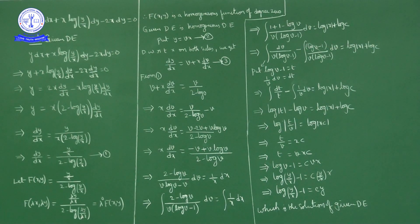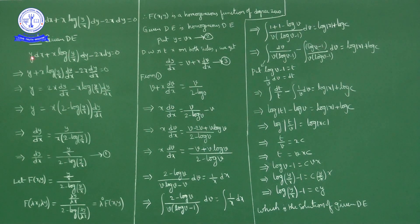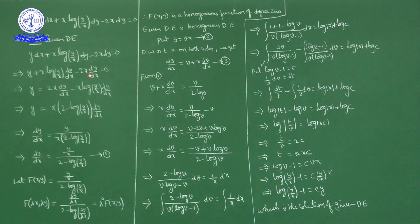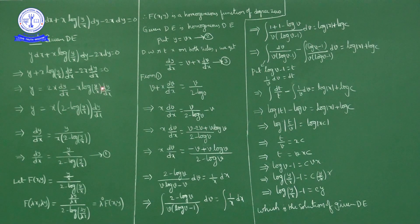We have to prove that this differential equation is a homogeneous differential equation. Rearranging: minus 2x dy becomes plus 2x dy/dx on one side. So y equals 2x dy/dx minus x into log(y/x) into dy/dx. From these two terms, we take dy/dx common and x common. So we get y equals x into (2 minus log(y/x)) into dy/dx.